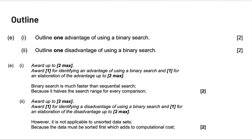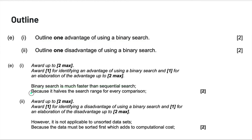Outline is one of the most common command terms in the exam. It's basically one point for stating the answer and another point for elaboration. For example: outline one advantage of using a binary search — binary search is much faster than sequential search because it halves the search range for every comparison. One mark for identification and one for elaboration. That's pretty much it for the command terms.